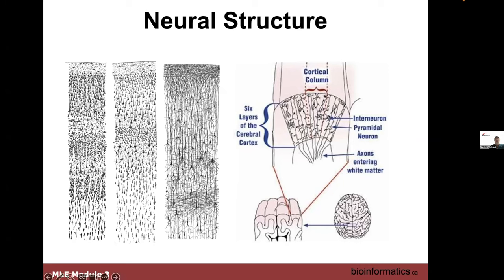They talk about cortical columns with certain layers — gray matter and white matter — and there's structure within the structure within the structure, all of them connected. The brain is a very complex computer.